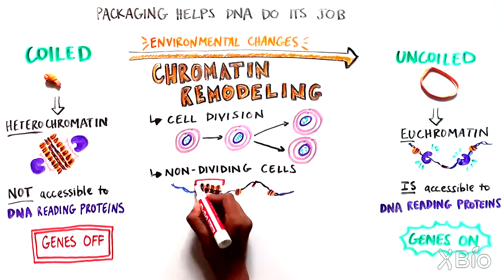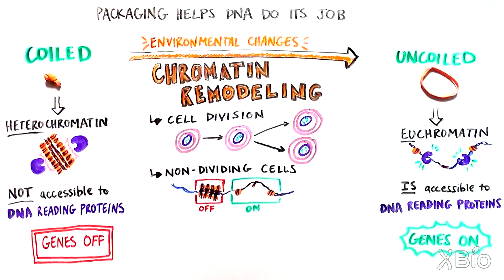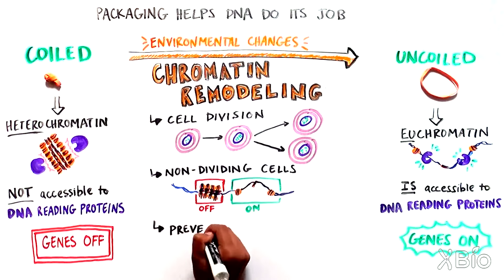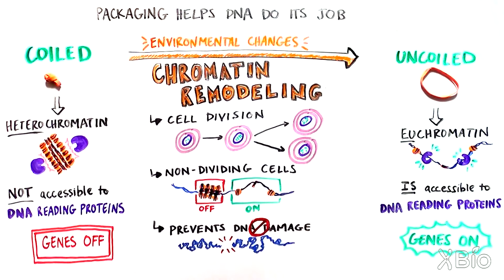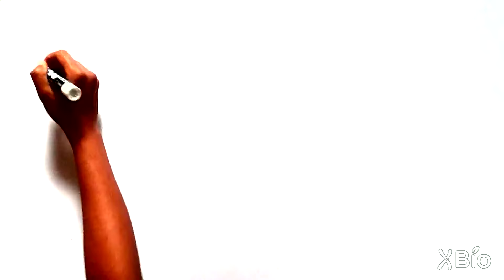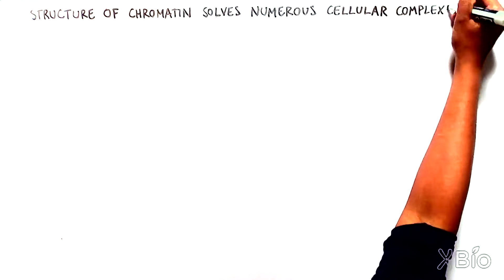which ensures complex organisms, like humans, run like a well-oiled machine. Beyond ensuring the right DNA is accessible at the right time, this packing structure also prevents DNA from getting tangled, which reduces DNA damage. The structure of chromatin is one of biology's many ingenious solutions to a mathematical challenge, and simultaneously solves numerous cellular complexities.